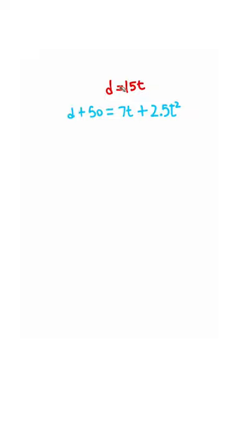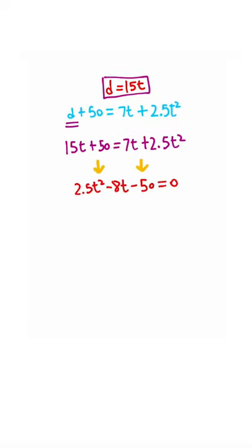Now we have a system of equations where we can take the car 1 equation and plug it into car 2 where we see d. That gives us this equation, which simplifies to this quadratic. Using algebra to simplify, you should end up at this quadratic here.